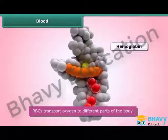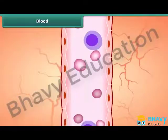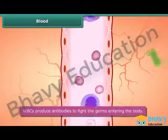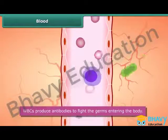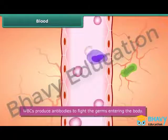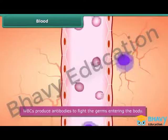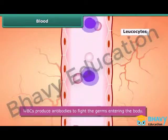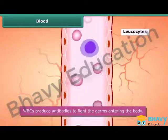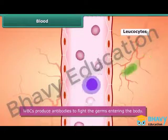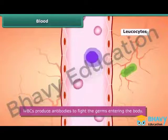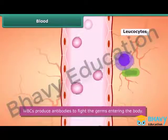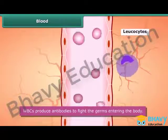RBCs are also known as erythrocytes. They are disc-shaped and contain a protein called hemoglobin, which is rich in iron and gives blood its red color. Hemoglobin transports oxygen to different parts of the body. WBCs are also known as leukocytes. They come in many different shapes and produce antibodies to fight germs entering the body.